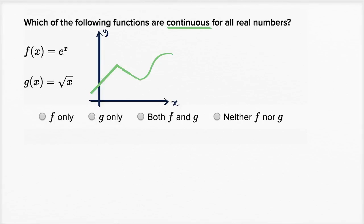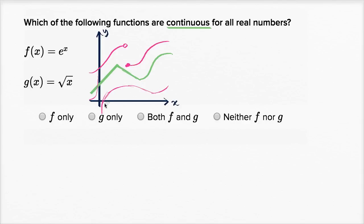Now examples of discontinuous functions over an interval — or non-continuous functions — well, they would have gaps of some kind. They could have some type of an asymptotic discontinuity, something like that, that makes it discontinuous. They could have a jump discontinuity, something like that. They could just have a gap where they're not defined. Or maybe they actually are defined there, but it's a removable discontinuity. So all of these are examples of discontinuous functions.